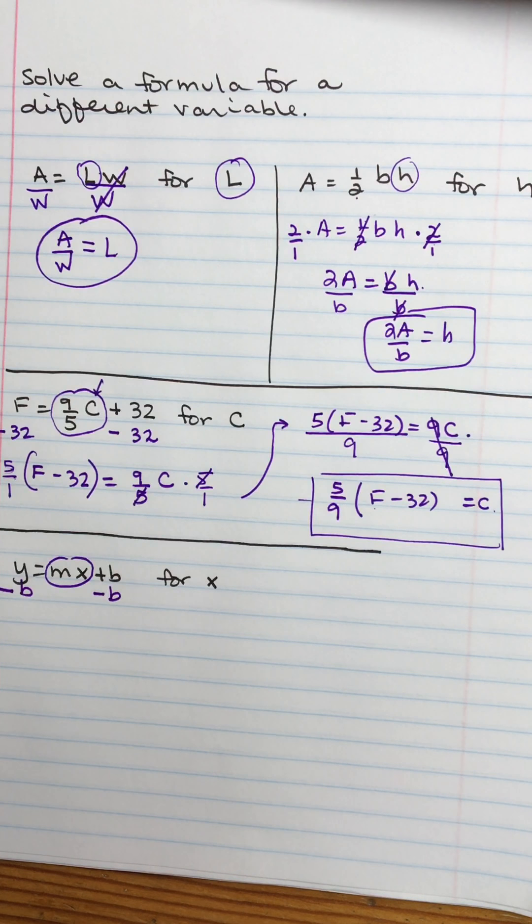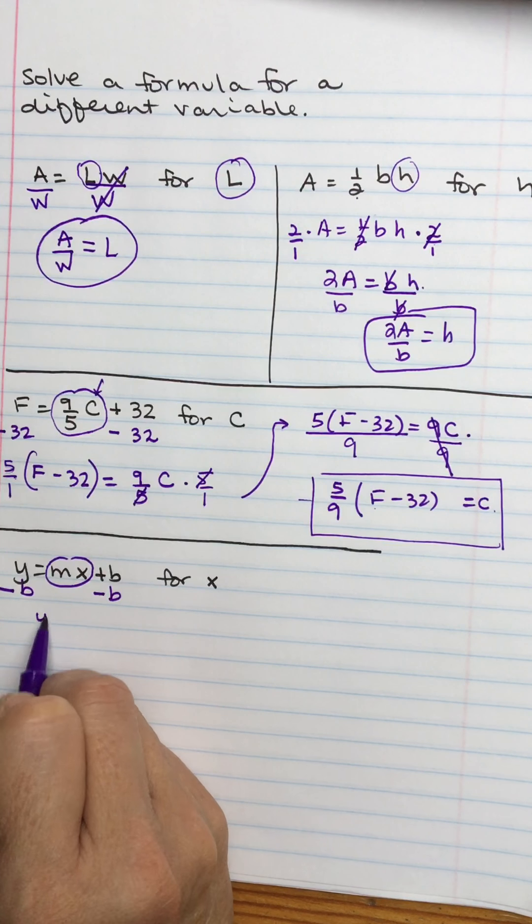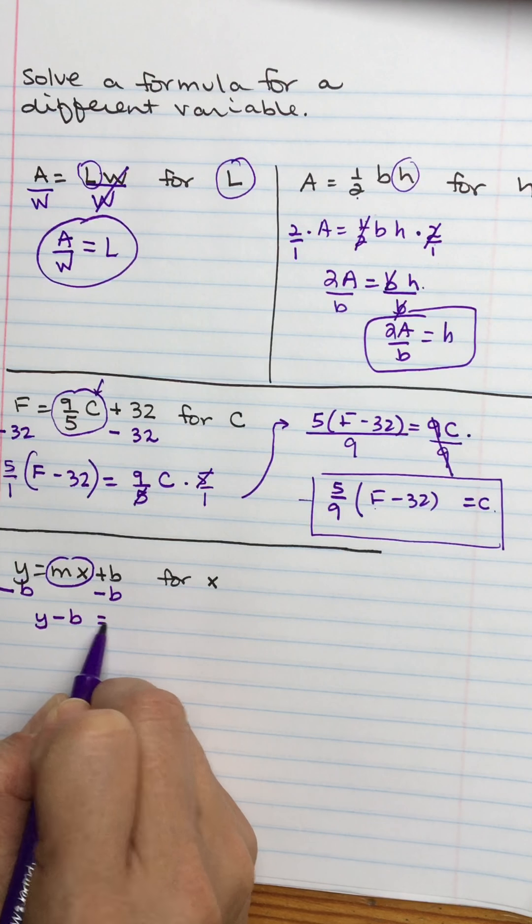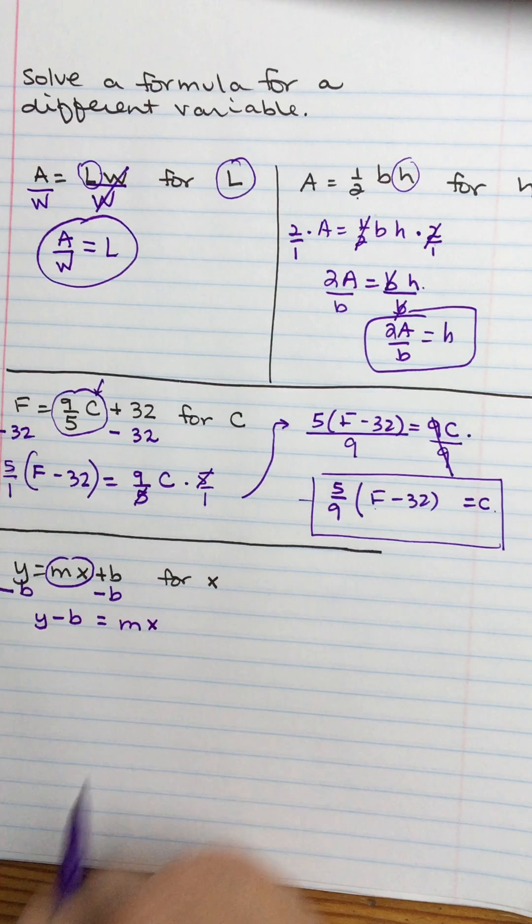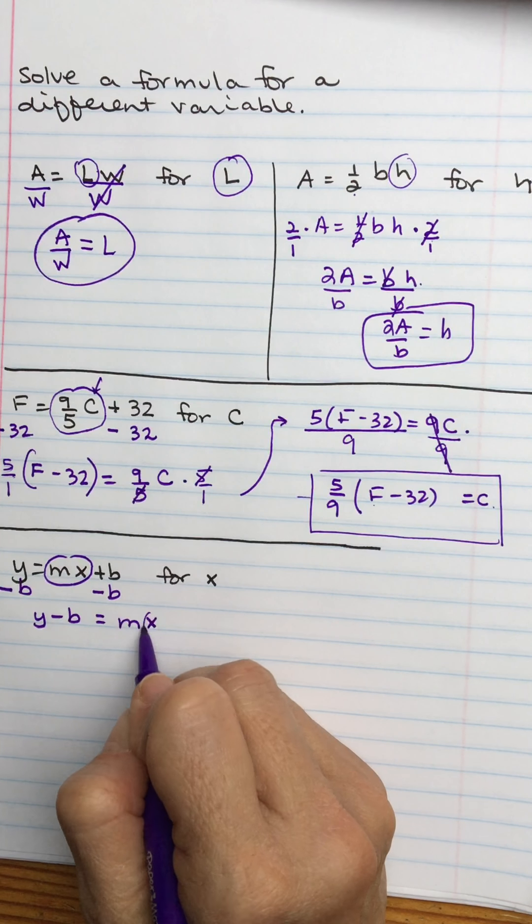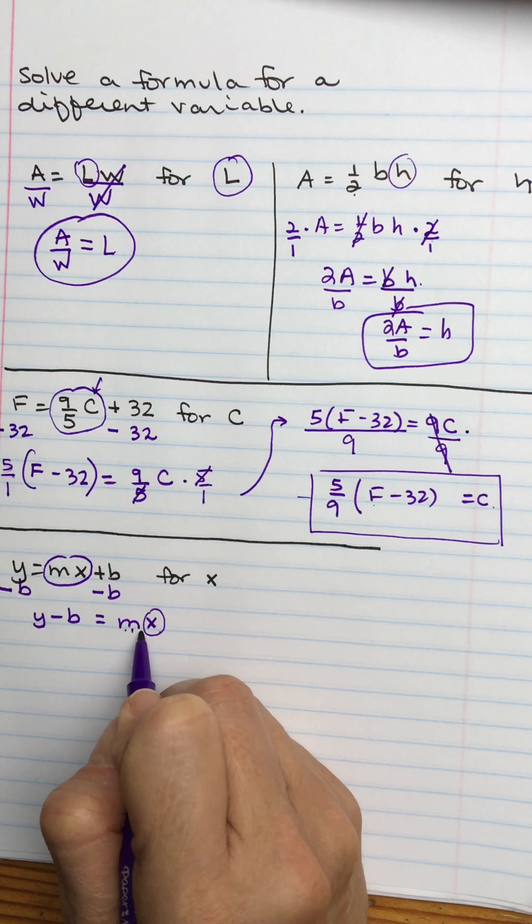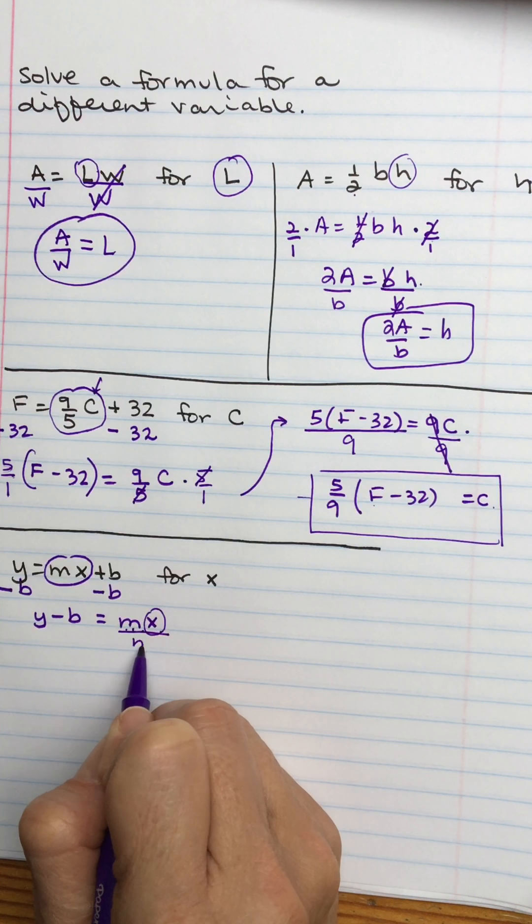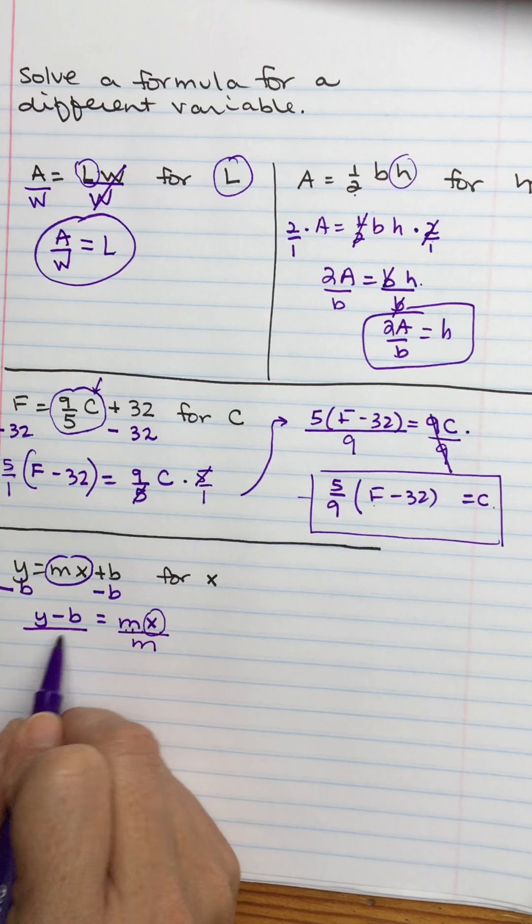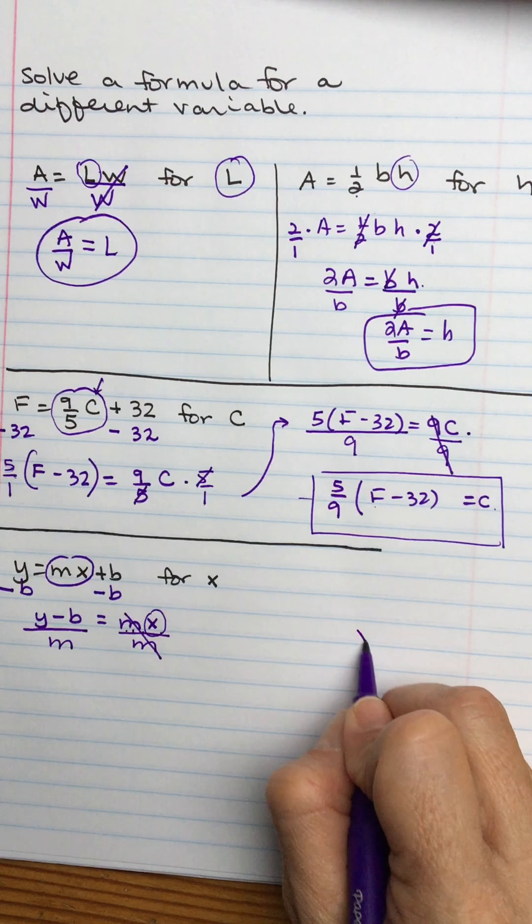It's a positive b, which means I need to subtract b so that they add to 0. And if I do it to the right, I have to do it to the left. Exact same thing. So y minus b stays y minus b equals m times x. Trying to solve for x, so I need to get rid of the m. It's m times x. So to get rid of that, to break that bond, I would divide.